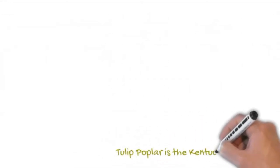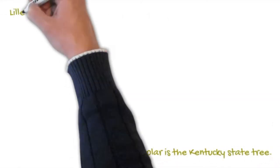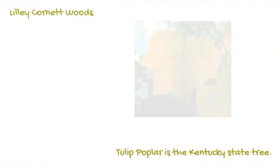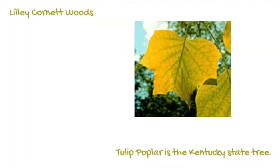At Lily Cornett Woods in the mesophilic forest of Appalachia, we actually have tulip poplars, and the tulip poplar is known as the Kentucky State Tree.